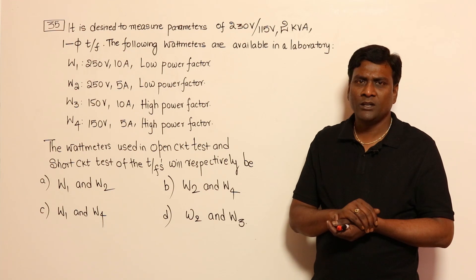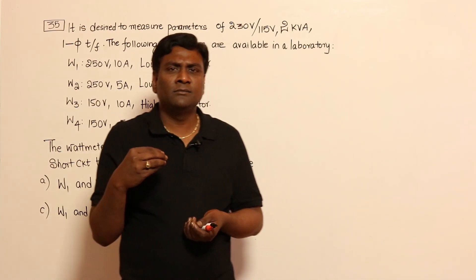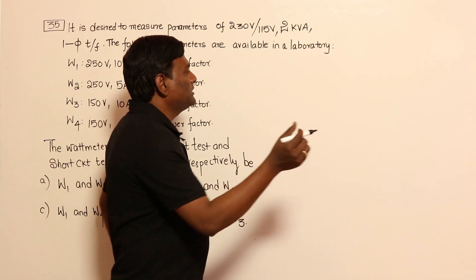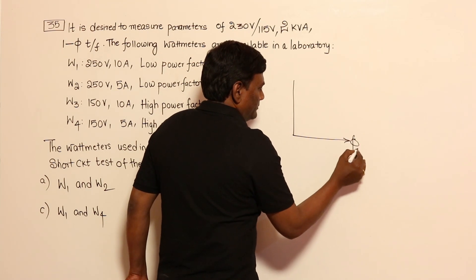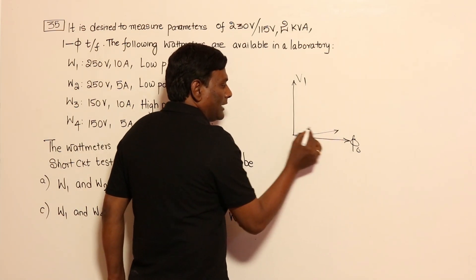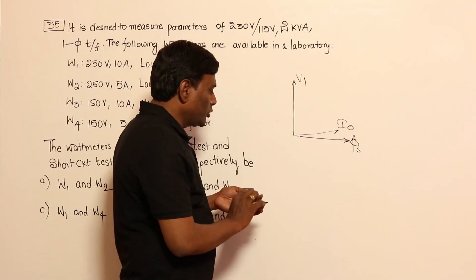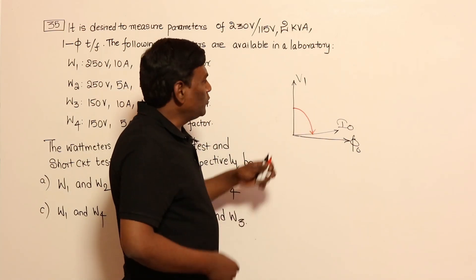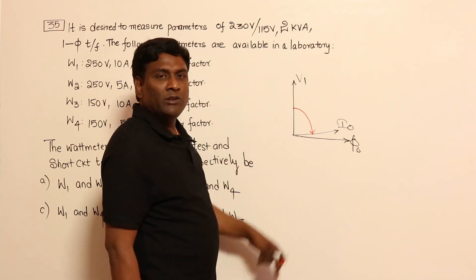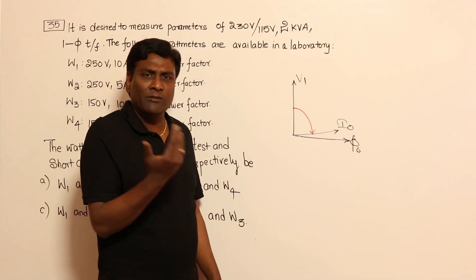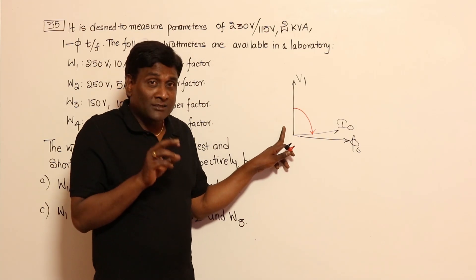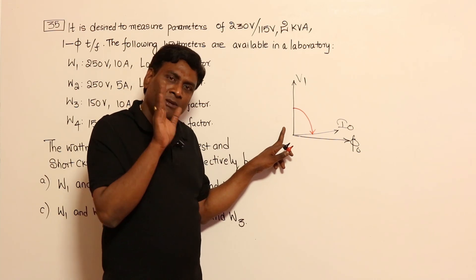Somehow in textbooks it is written that the OC test uses an LPF wattmeter, and people started saying the SC test uses an HPF wattmeter — which is wrong. The concept is: OC test should use an LPF wattmeter, and SC test HPF is incorrect. In the OC test phasor diagram, I_mu is large and I_w is small, so the angle between V1 and I0 is large — hence low power factor. So OC test correctly uses LPF wattmeter. But that does not mean SC test should use HPF — in practice, SC test also uses LPF wattmeter only.